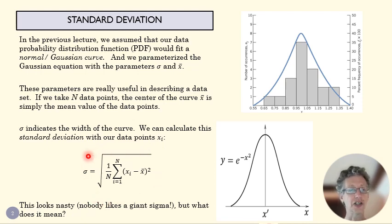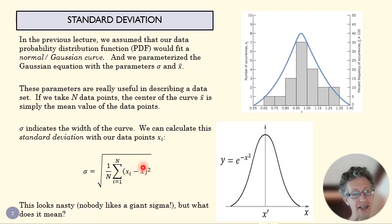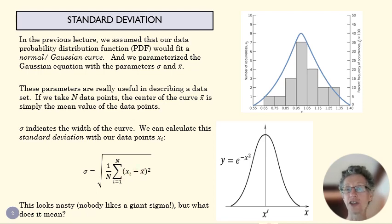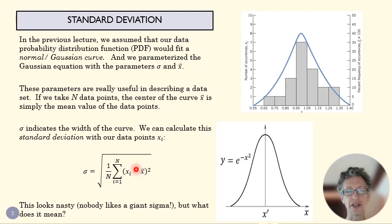Here's our equation for standard deviation — it looks like it's not a lot of fun with that big sigma. What this math says: x-bar is our mean value, x-i is each of our data points. We take each data point and find the difference between that point and the mean — that's called a deviation, which is where 'standard deviation' comes from. We square it to get rid of the sign, because we want the distance from x-bar regardless of which side it's on. Then we sum all those squared deviations.